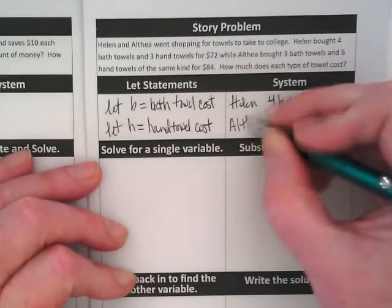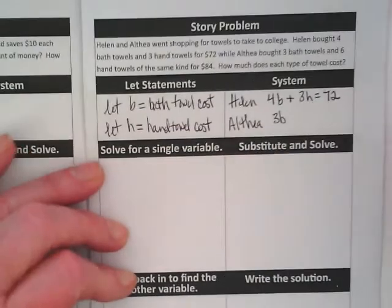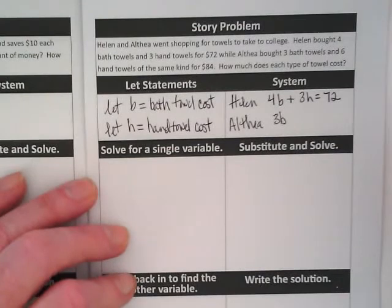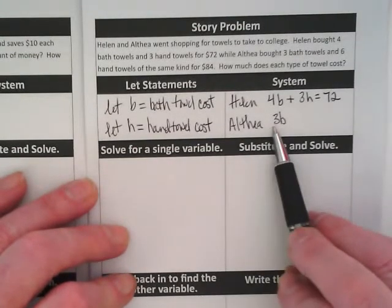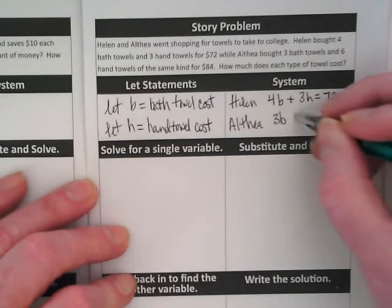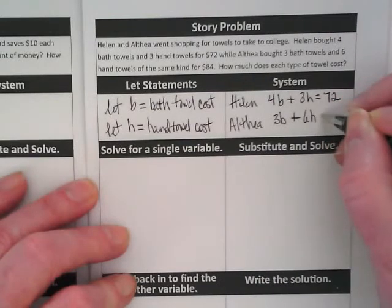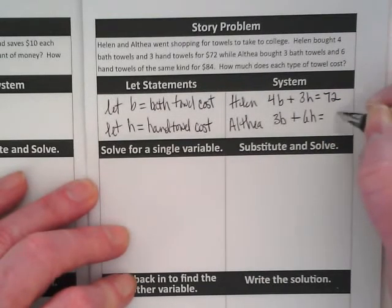Here's Althea. She bought three bath towels. What does the B stand for? The cost of the bath towels. She's buying three of them. We don't know how much they cost. We're trying to find that out. Plus six H equals 84.